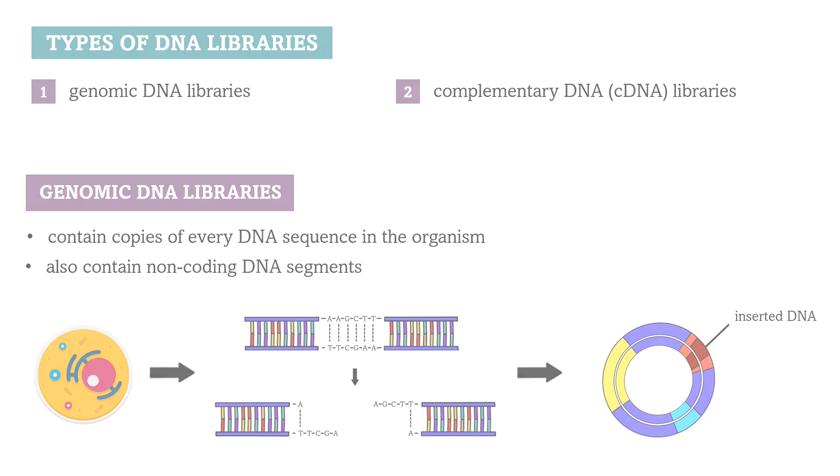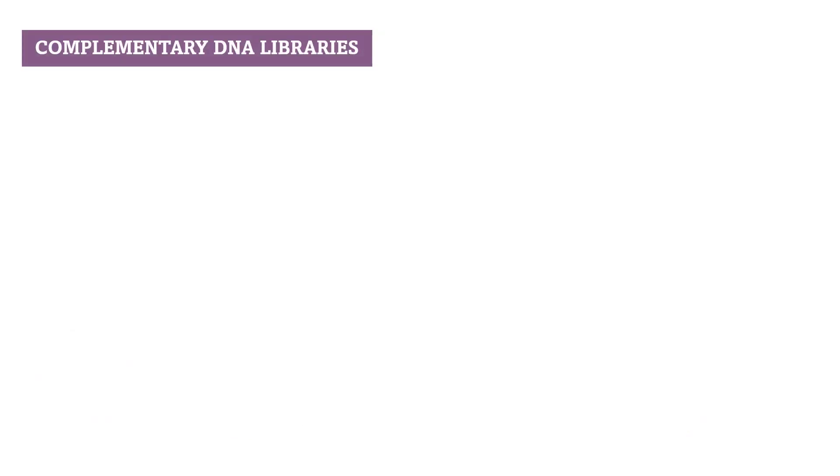The second main type of DNA libraries, complementary DNA cDNA libraries, contain DNA copies made from mRNA molecules. For that reason, cDNA libraries only consist of DNA sequences that are transcribed into mRNA and that were transcriptionally active at the time the library was made.